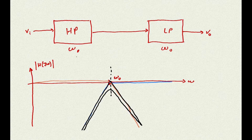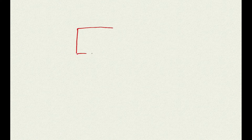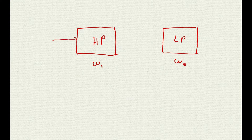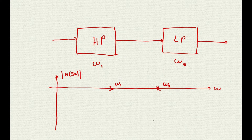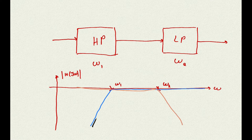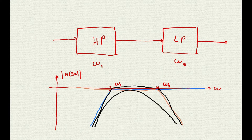So far we have seen what happens if the lowpass and highpass filters have the same cutoff frequency. But what would happen if the frequencies are different? Here is a highpass filter with cutoff frequency omega-1 and a lowpass filter with cutoff frequency omega-2. On the Bode diagram, omega-1 and omega-2 are now two separate poles. Drawing the highpass in blue and the lowpass in orange, once we add them up we see that we still have a bandpass filter — but now with a band larger than before. Therefore, by choosing the two poles appropriately, we can create a bandpass filter with a band that is as large as we desire.